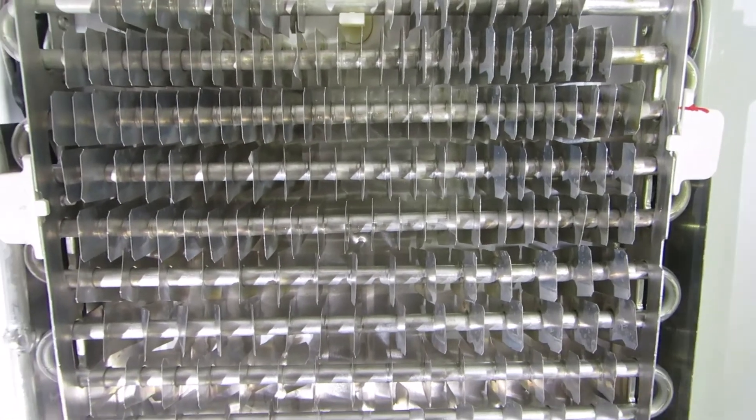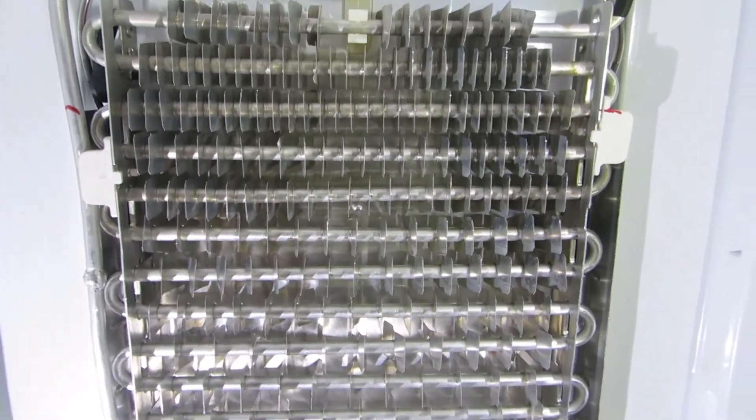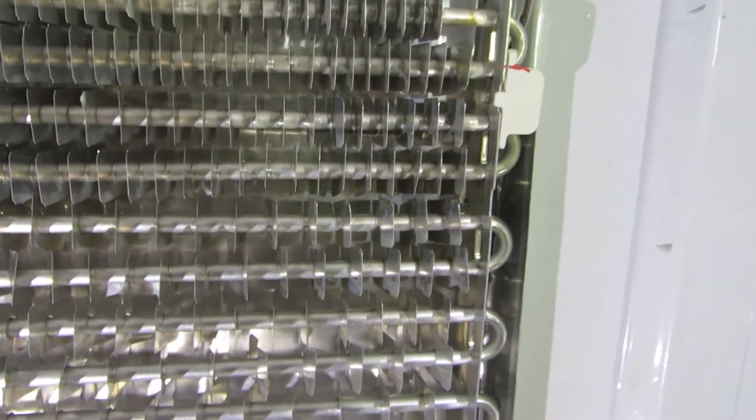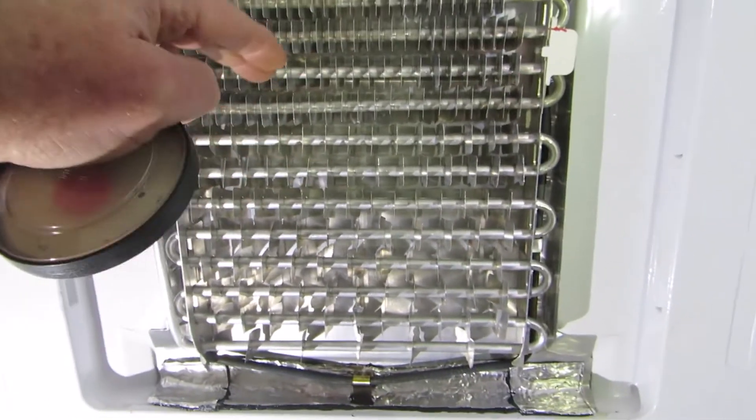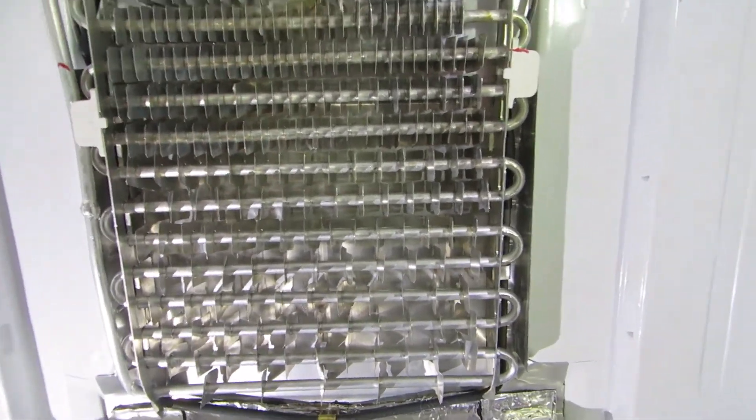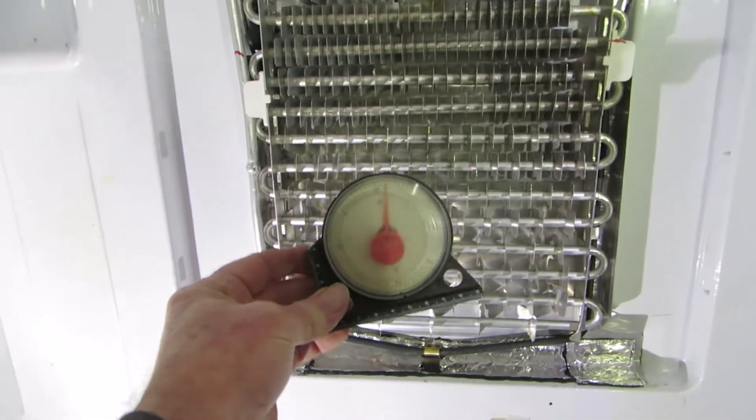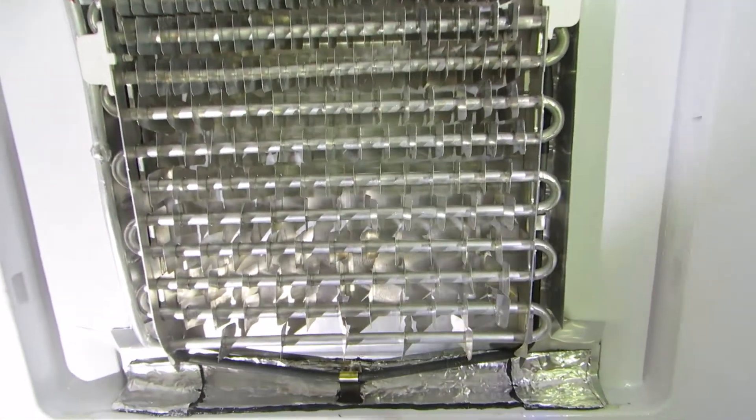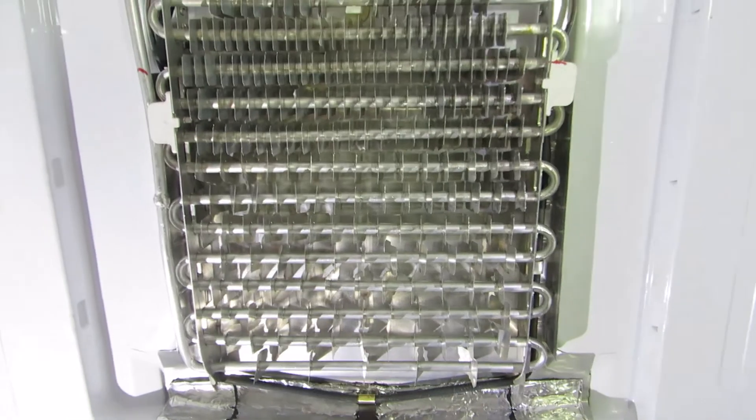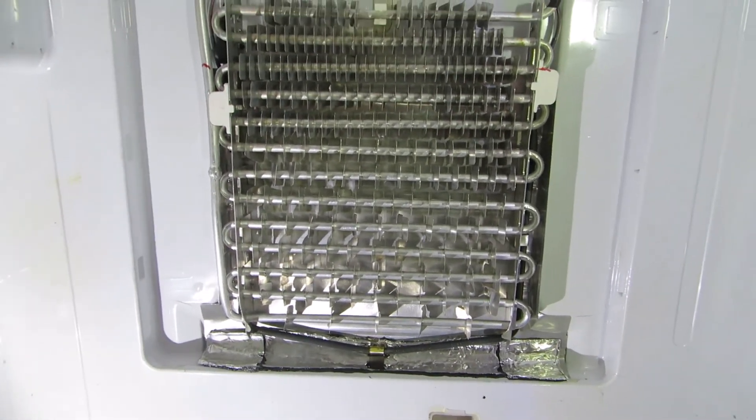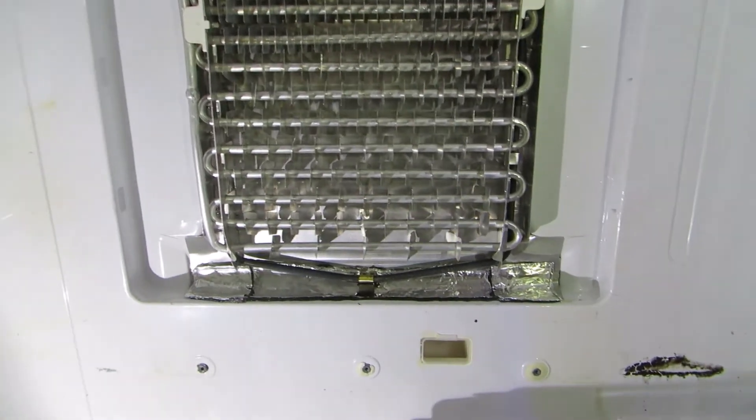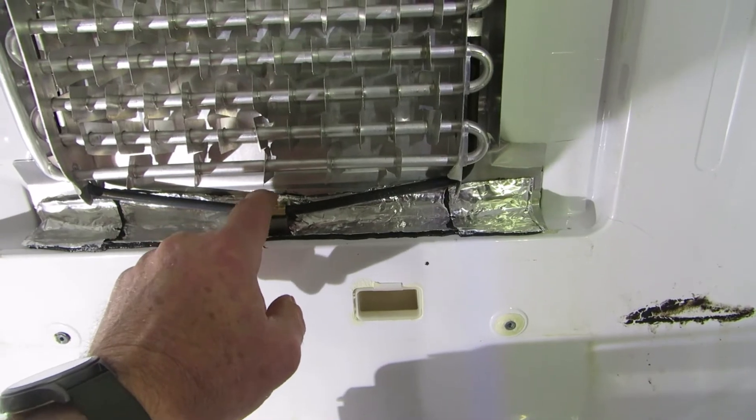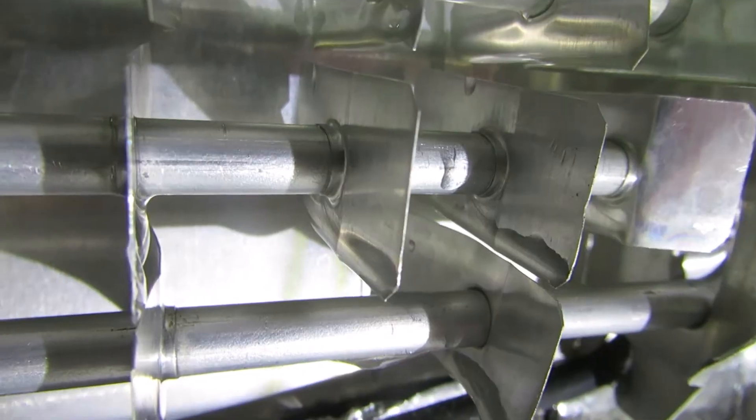Now the other thing that they do suggest is that this whole fridge leans backwards about three degrees, and I think that's to assist getting the water to the back of that aluminum and not to the front. You can use something like this angle finder, or you could just use a spirit level and just make sure that it's not sitting perfectly level. If anything you want it tilting a little bit backwards which will assist with the draining.